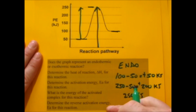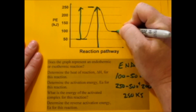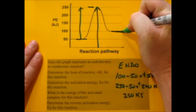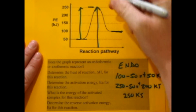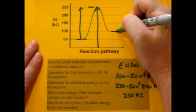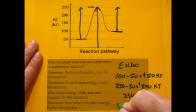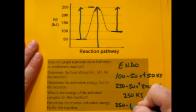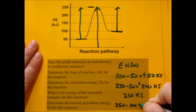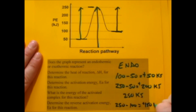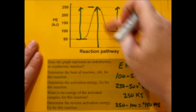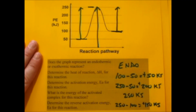Determine the reverse activation energy — so let's say we went backwards. If we were to go backwards, you'd have to get up the hill from the products' side. We're going from 100 up to 250, starting at 100. So we'd have to add 150 kilojoules to the system to make it reverse and go backwards.